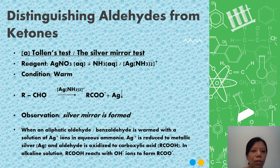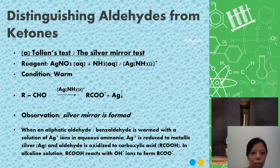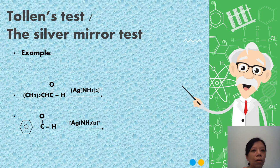Tollens test: we use silver diamine ions or silver nitrate in ammonia. Conditions: warm. Observation: you will see silver mirror. Both aliphatic aldehydes and benzaldehyde can undergo this reaction. You can see the silver mirror here.